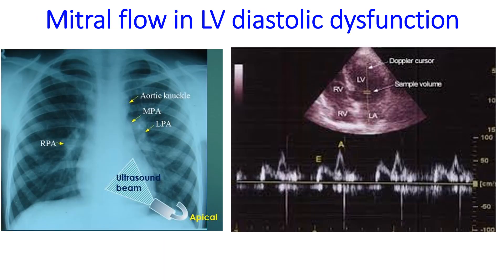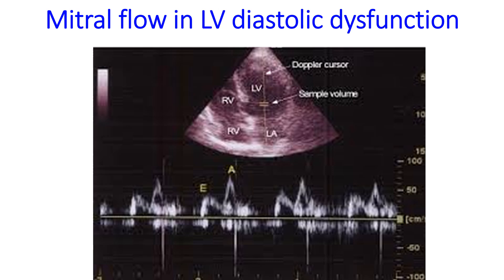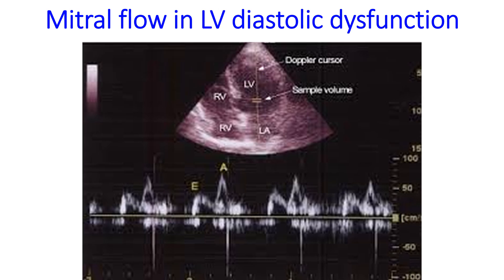Doppler interrogation of the mitral valve is usually done from the apical four-chamber view. The transducer is placed directly over the apex beat and the echo beam is directed upwards. A good four-chamber view of the heart is obtained showing all four chambers and both atrioventricular valves. The Doppler cursor is aligned along the long axis of the left ventricle passing through the mitral valve, and the sample volume is placed just distal to the mitral valve to pick up flow in the left ventricular inflow. The initial portion of diastolic flow is called the E wave (early diastolic) and the final portion during atrial systole is called the A wave.